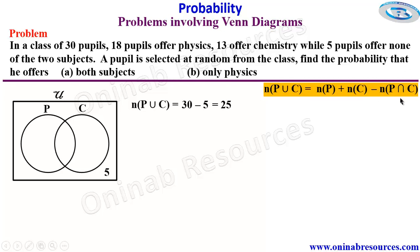So that if we make this N of P intersection C as the subject of the formula, because we need to find that, it's going to be N of P intersection C is equal to N of P plus N of C then minus N of P union C.